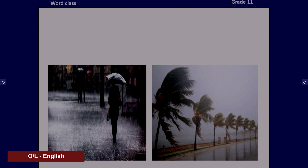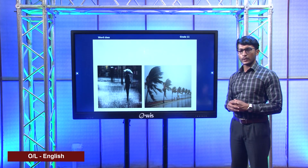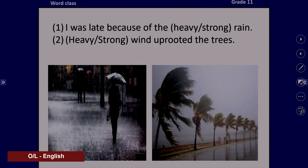Now look at these two pictures. The first picture is about rain and the second is about wind. How would you describe the rain and wind? Let's see the sentences. I was late because of the heavy or strong rain — would it be right to say heavy rain or strong rain? Yes, it should be heavy rain; we never say strong rain. In the second sentence, heavy or strong wind uprooted the trees — the best choice is strong wind. We never say heavy wind.